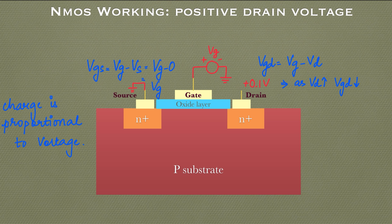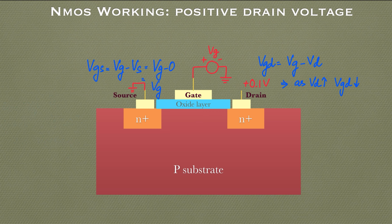As the drain potential increases, the effective voltage from source to drain changes along the channel. This causes the channel to become tapered at the drain end, because the effective positive voltage at the drain side is reducing. Fewer electrons are attracted toward the drain terminal, causing the channel to take a tapered shape as shown in the figure.